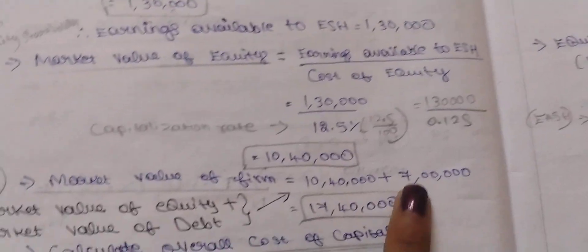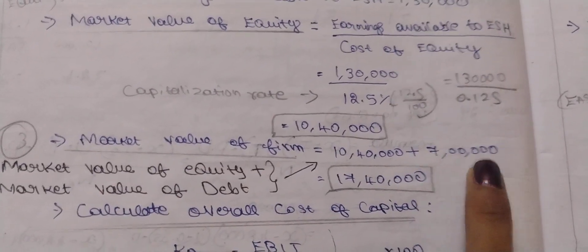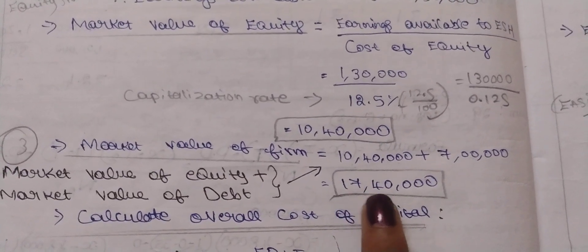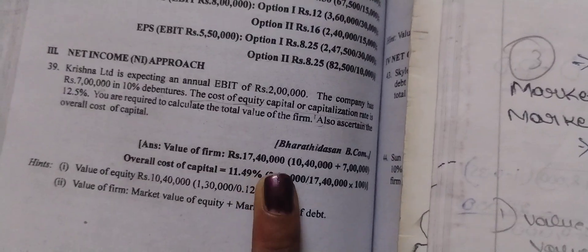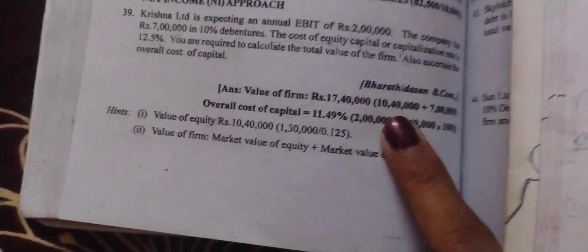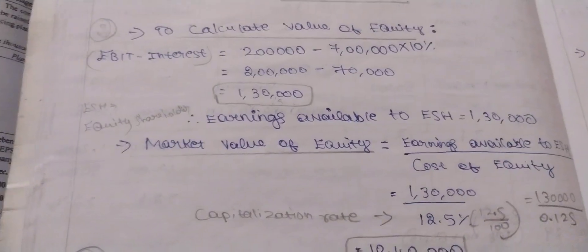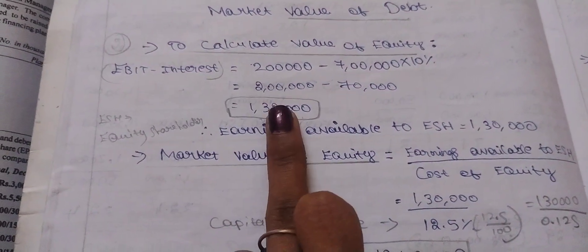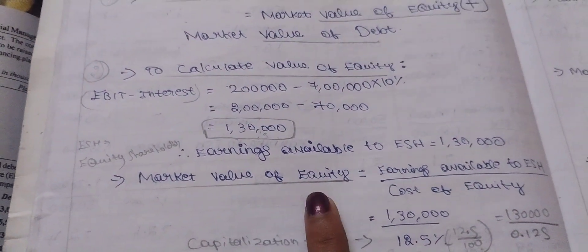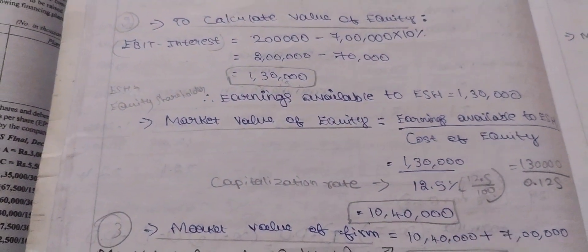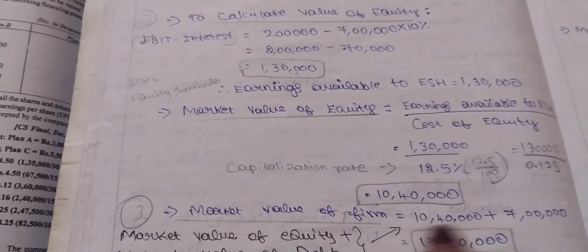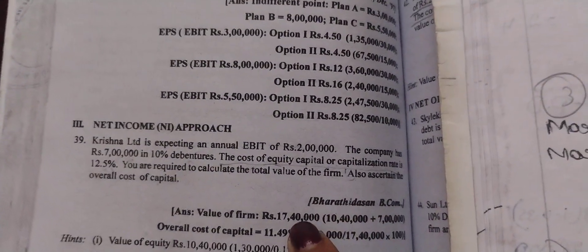Earnings available to equity shareholders is 1,30,000 divided by 12.5%, giving market value of equity of 10,40,000. Adding debt of 7,00,000, the total market value of the firm is 17,40,000.